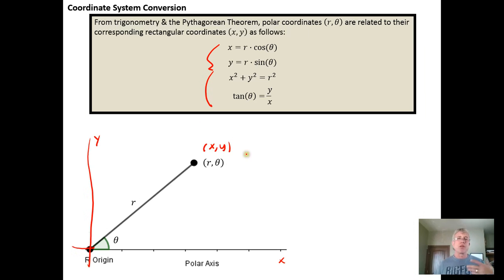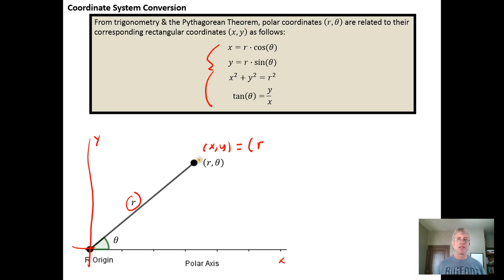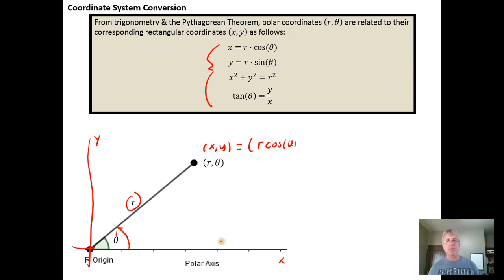What did we learn in trigonometry? We learned that the x coordinate could be found by doing the radius times the cosine of theta, where theta is the angle made with respect to the positive x axis. So if we impose the coordinate systems over top of each other, the radial axis is going to correspond to the positive x axis. And we know that the y coordinate from trigonometry corresponded to r times the sine of theta.